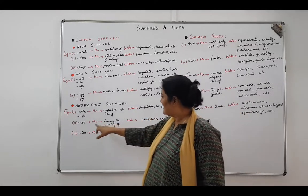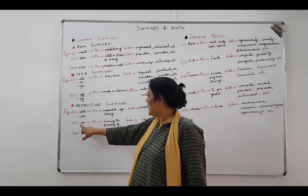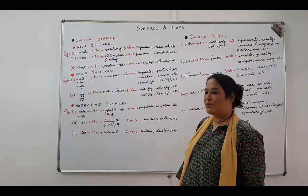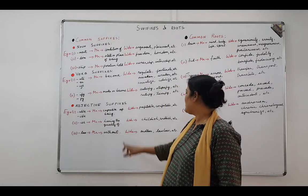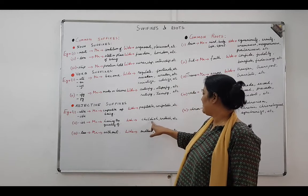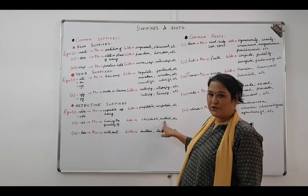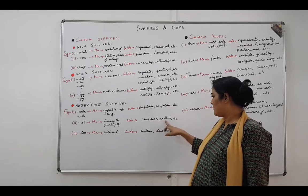Let's look at the second adjective suffix: i-s-h, meaning having the quality of. So if you have the qualities of a child, then it is childish, an adjective for that. And if you are a snob, then it is snobbish.